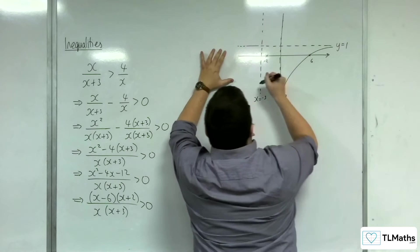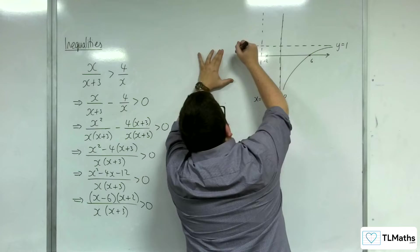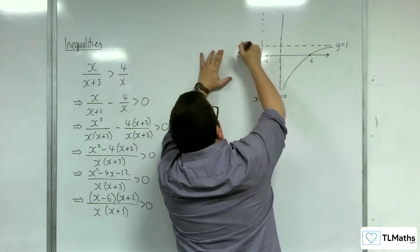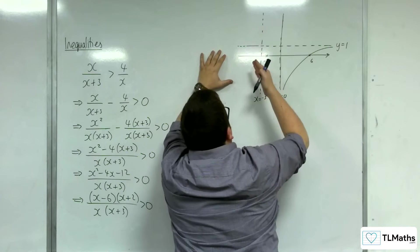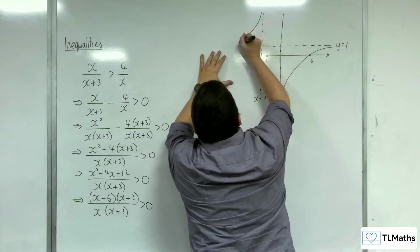Here you can't have it below here, below that y equals 1 line, because that would mean it would have to cross the x axis again, which we know it doesn't. So that means the graph has to be up here.